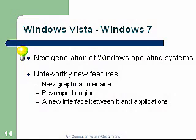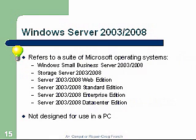Windows Server 2003–2008 refers to a suite of Microsoft operating systems. We've got business versions including storage, web, standard, enterprise, and data center — they came out with a lot of different flavors and versions. These are not designed for use on the PC; XP is our primary operating system for the PC.